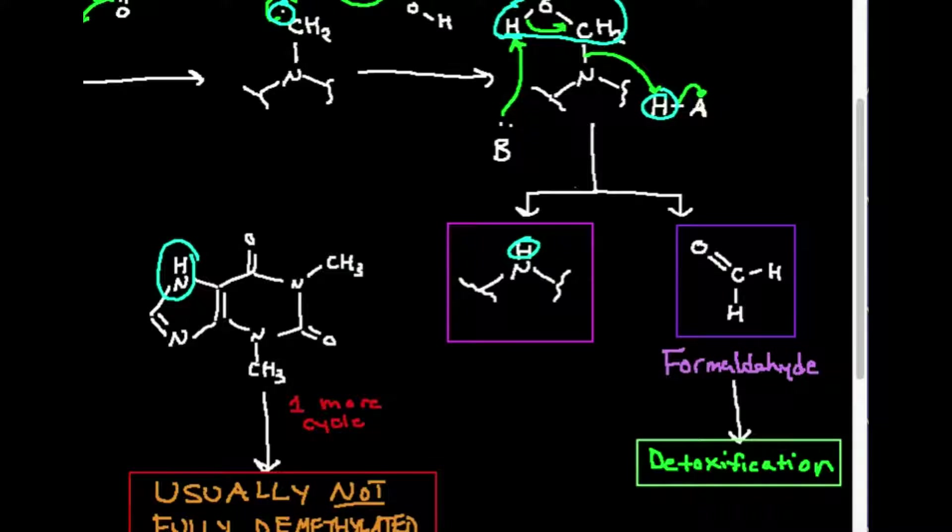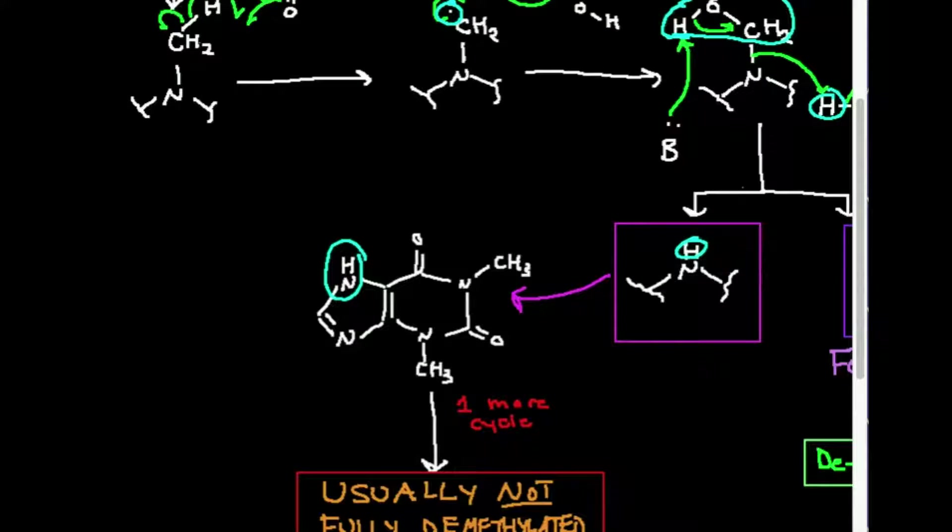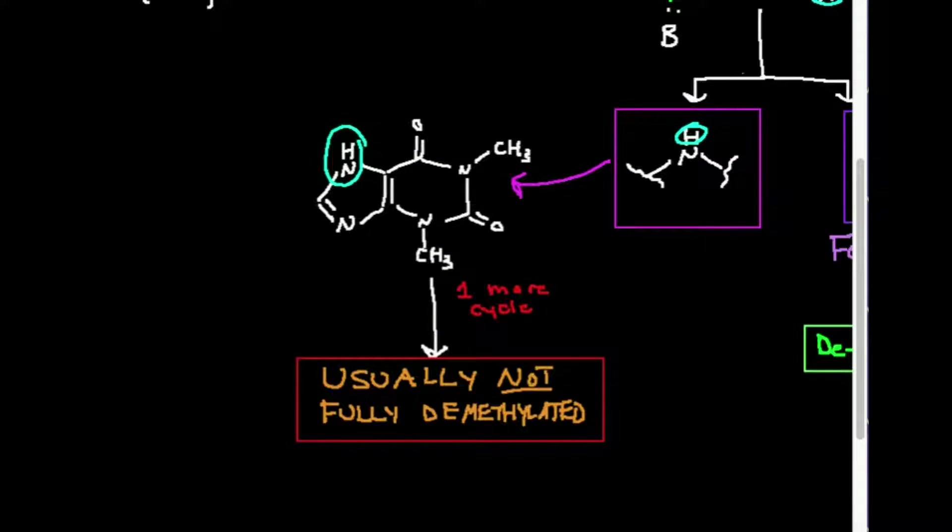But essentially if you look at this part right here, that is this. I've just abbreviated everything else. So notice we demethylated the top position on the five-membered ring, and these two methyl groups are still there. Now I mentioned at the beginning of the video, caffeine is normally not demethylated all three times. It's normally demethylated twice, and so either one of these positions now, either one, this one or this one, is probably going to get demethylated, and then that's why I say one more cycle, so usually not fully demethylated. So you're usually going to end up with a monomethylated xanthine derivative, which will undergo further metabolism.